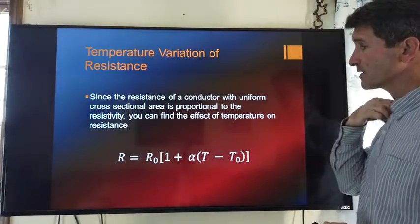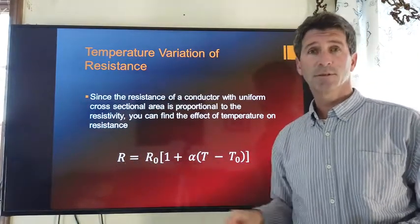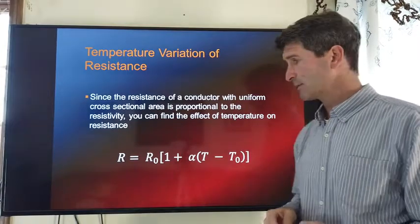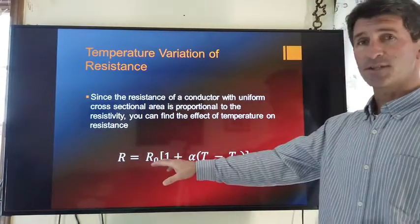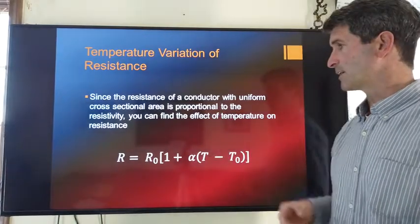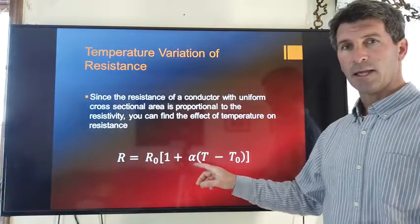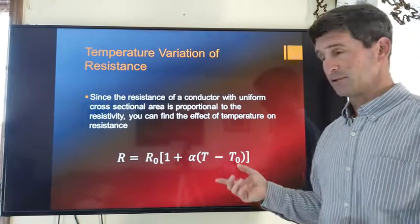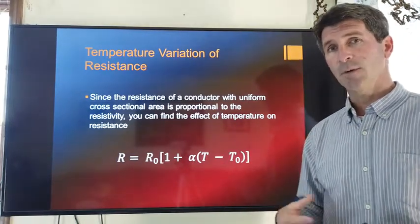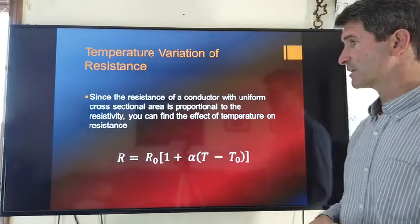Temperature variation for resistance, we know that just like resistivity, the resistance will increase as you increase the temperature. Whatever the resistance is at 20 degrees, the new resistance will go by this equation right here. Which means that, again, this alpha, this temperature coefficient, determines how much a metal will increase in resistance as you go above that 20 degrees Celsius.